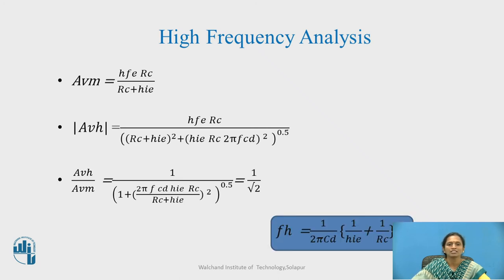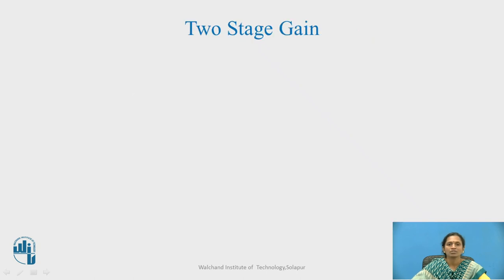When I get the ratio of AVH by AVM which is again equal to 1 by root 2, I will take it as the ratio and when I compare this part equal to the higher cutoff frequency. I can write 1 by 2 pi CD into bracket 1 by HI plus 1 by RC. This is my high frequency gain.